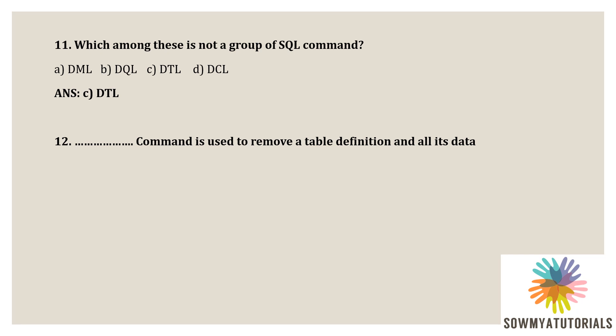Next question: which command is used to remove a table definition and all its data? Options are: option A, remove; option B, drop; option C, delete; option D, remove. The correct answer is option B, drop. Drop is the command used to remove a whole table definition and all its data.